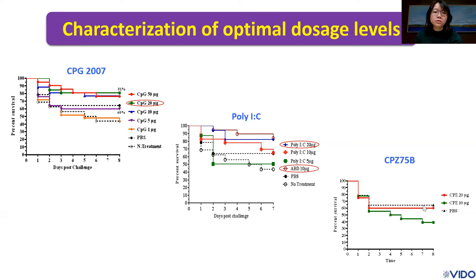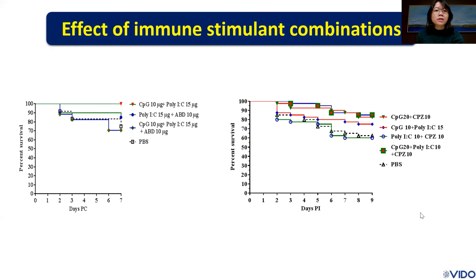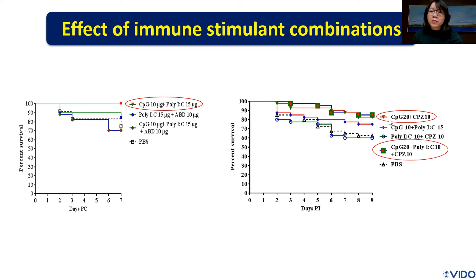We used PBS as the control group in our experiment. We then tried to combine these innate immune stimulants to see the combination effect. We found that the combination of CpG 10 micrograms with poly IC 15 micrograms showed the highest protection, followed by the combination of CpG 20 micrograms with polyphosphate, or three stimulants: CpG 20 micrograms, poly IC 10, and polyphosphate 10. This experiment was observed for seven to nine days after challenge.